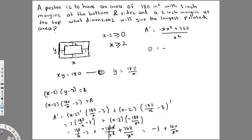Solving −3x² + 360 = 0 gives x² = 120, so x = ±√120. Since our domain requires x to be positive (x > 2), we take x = √120 as our critical number.